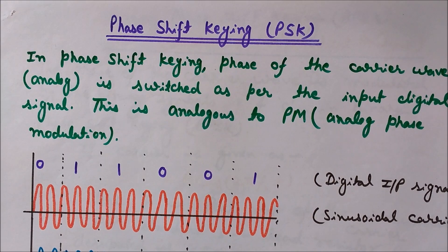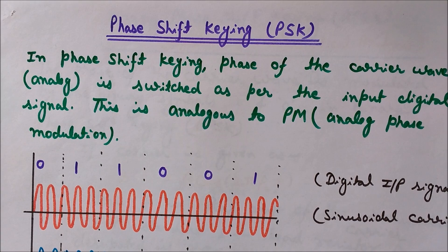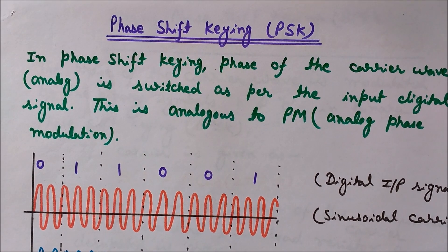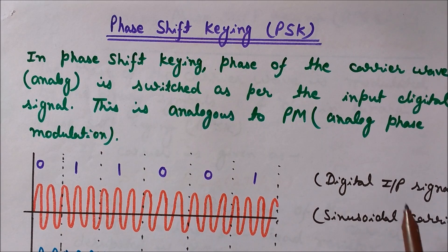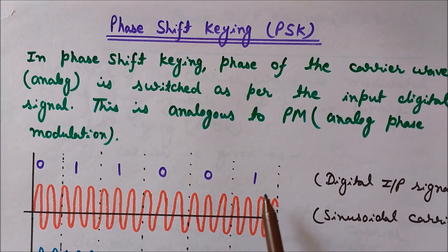In phase shift keying, the phase of the carrier wave is switched as per the input signal, and it is analogous to phase modulation. In phase modulation, the phase of the carrier wave is changed according to the instantaneous value of the modulating signal. Here we use the input signal as digital, so the modulating input signal is digital, while in analog phase modulation it is of analog nature. In both cases, the carrier wave is sinusoidal; the difference is only in the modulating signal.